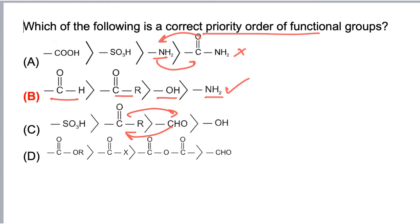In option D, ester has higher priority than acid chloride. This is correct, but acid anhydride has even higher priority than ester. So this is not correct. The correct answer to the question is B.